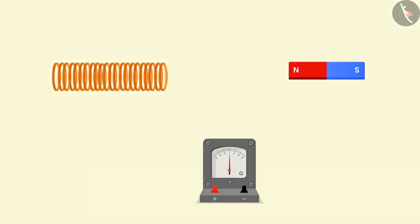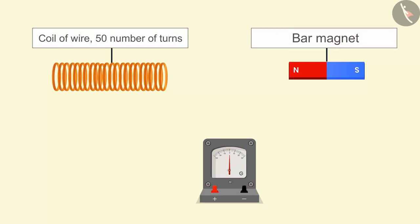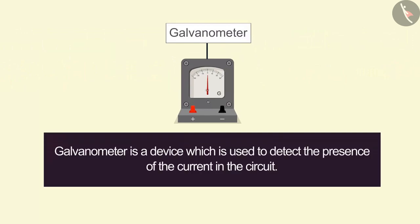Let's understand electromagnetic induction with the help of this activity. To perform this activity we need a coil of wire having 50 number of turns, a power magnet and a galvanometer. What is galvanometer? Galvanometer is a device which is used to detect the presence of current in the circuit.